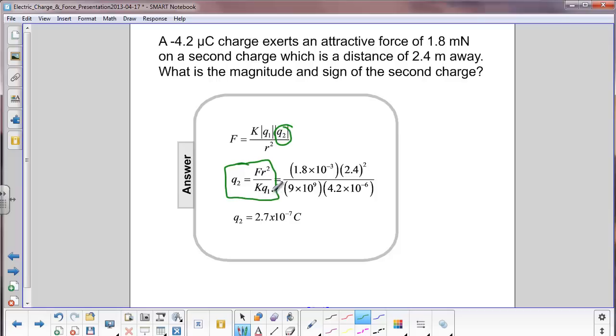Notice I've dropped the absolute value signs here. I then put the numbers in, ensuring I put a positive charge here, 4.2 times 10 to the minus 6. And I get q2 equals 2.7 times 10 to the minus 7 coulombs.